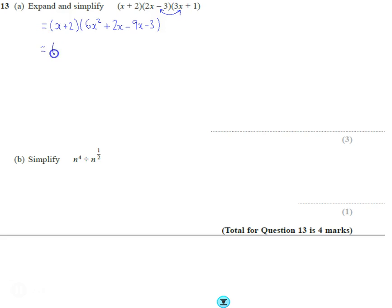So let's just write it out again, but that second bracket is actually going to simplify a little bit. We're going to get 6x squared plus 2x minus 9x is minus 7x, and then we get the minus 3 at the end.